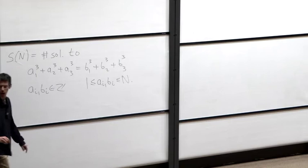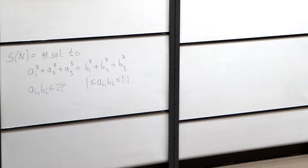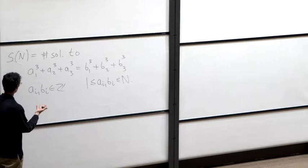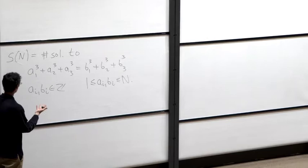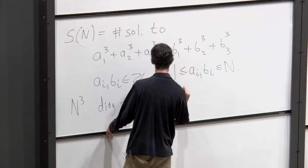Let's start by guessing how many solutions we might expect this equation to have. First of all, there are n³ trivial — diagonal — solutions when aᵢ equals bᵢ. The more interesting thing is to figure out how many non-diagonal solutions there are.